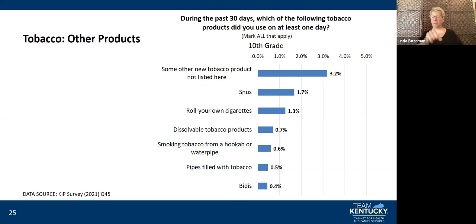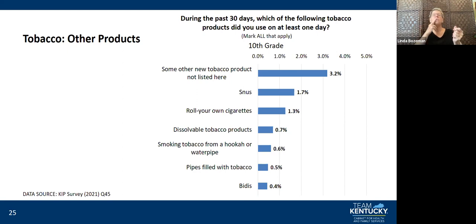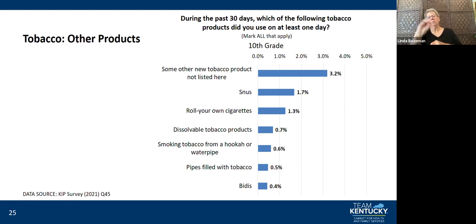During the past 30 days, which tobacco products did 10th graders use on at least one day? Some other new tobacco products not listed: 3.2%. Snus: 1.7%. Roll-your-own cigarettes: 1.3%. Dissolvable tobacco products: 0.7%. Smoking tobacco from a hookah or water pipe: 0.6%. Pipes filled with tobacco: 0.5%. Bidis: 0.4%.